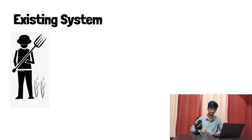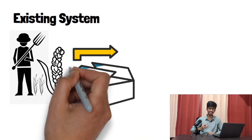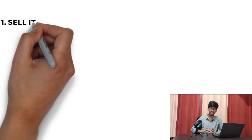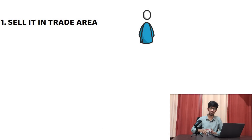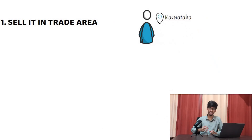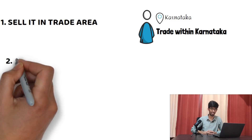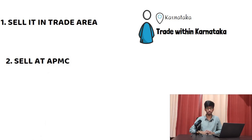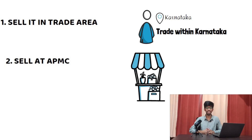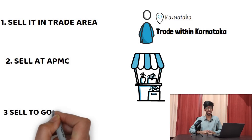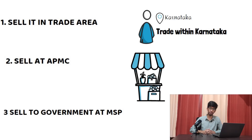If the farmer had to sell his produce, he only had three options under the existing system. Option one: he can sell in the trade area — for example, a farmer from Karnataka had the right to sell his produce within Karnataka to any trader he wanted. Option two: he can go to APMC and sell his produce there. Option three: he can sell it to the government at MSP, or the minimum support price.